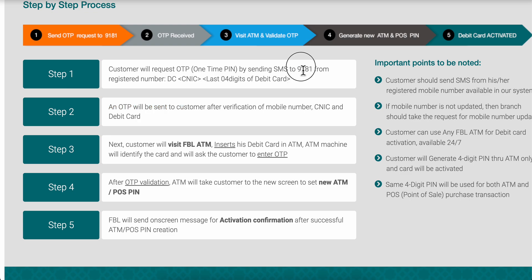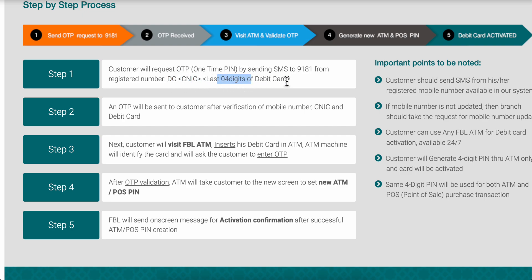Simply send the SMS to this number, then enter DC, followed by your CNIC number and the last four digits of the debit card.